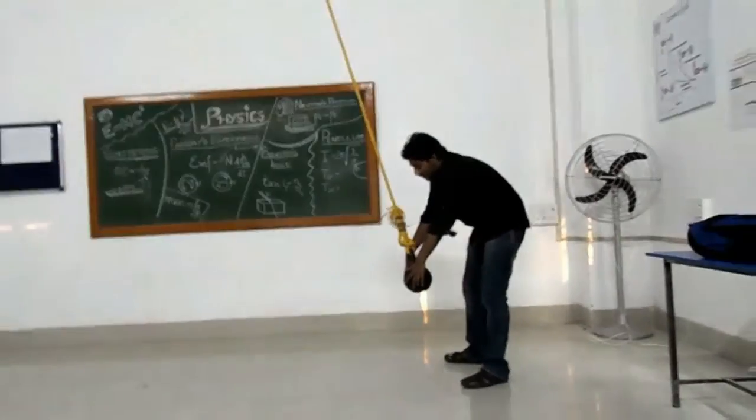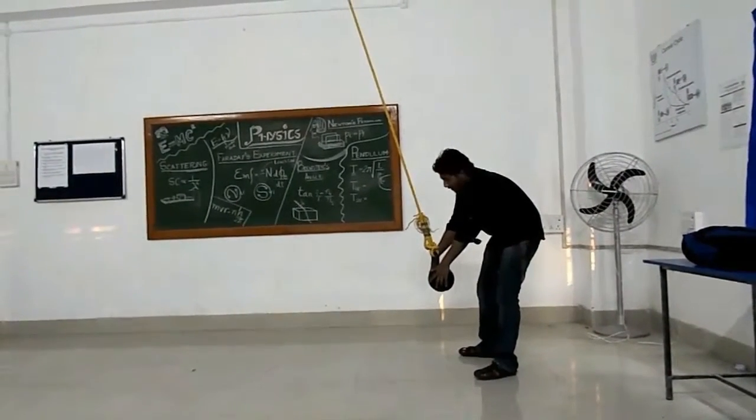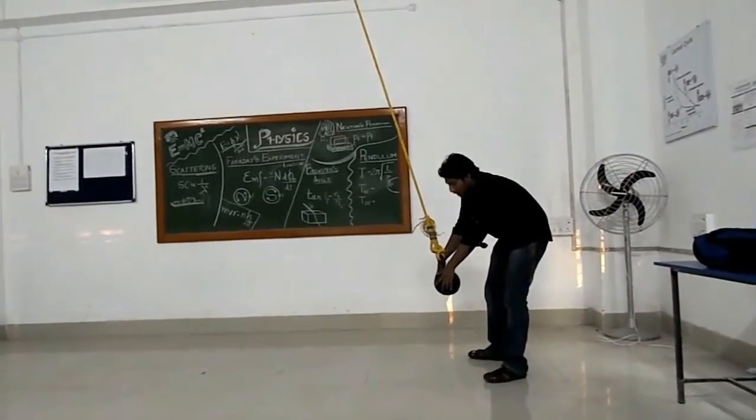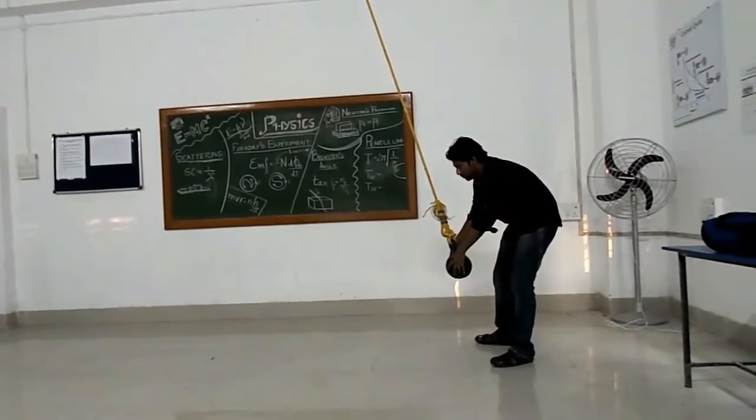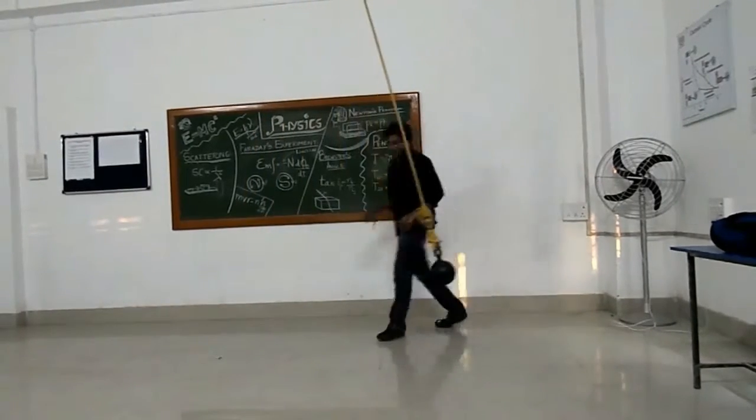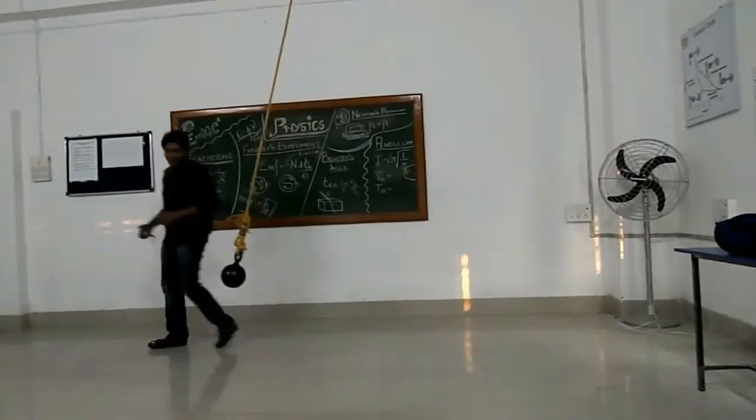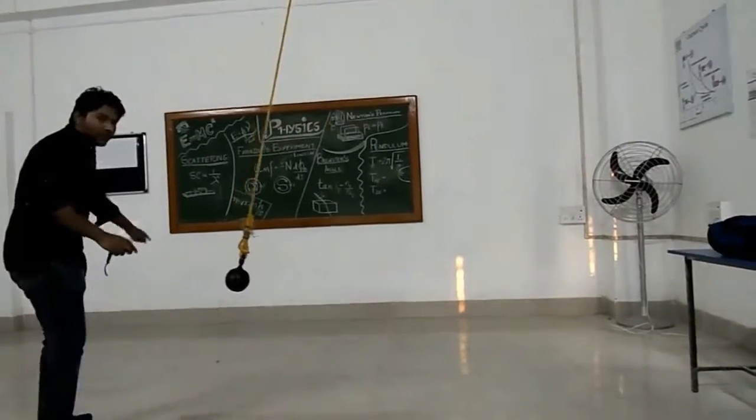Now I will measure the time period by timing the oscillations of the bob. I will start when the bob is at its extreme position.